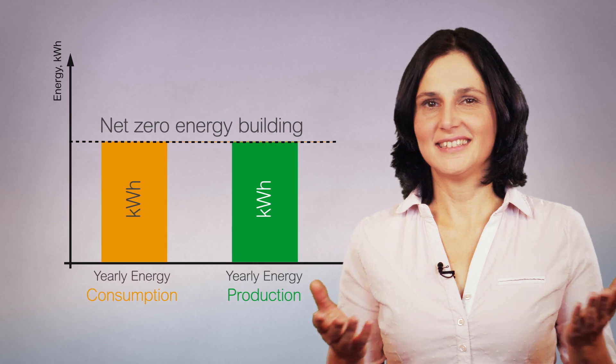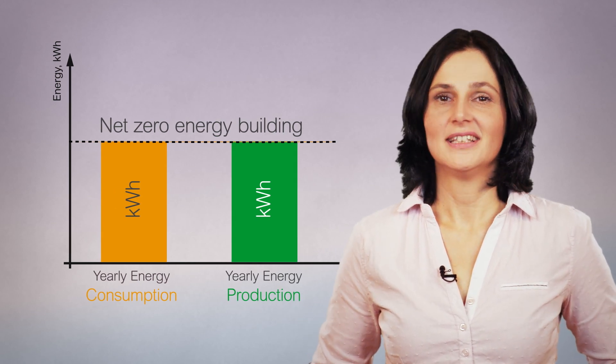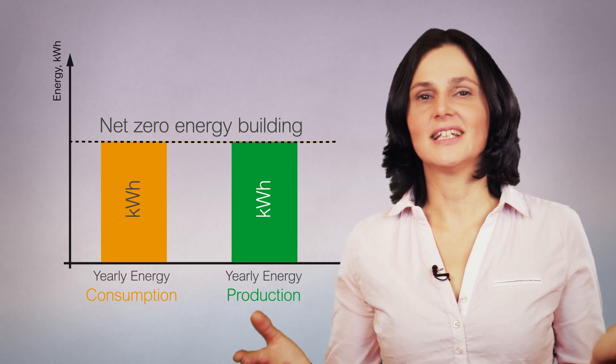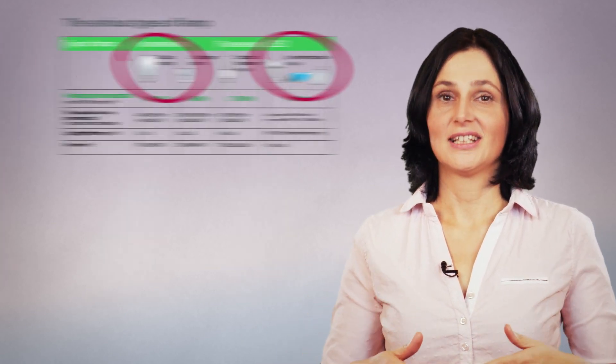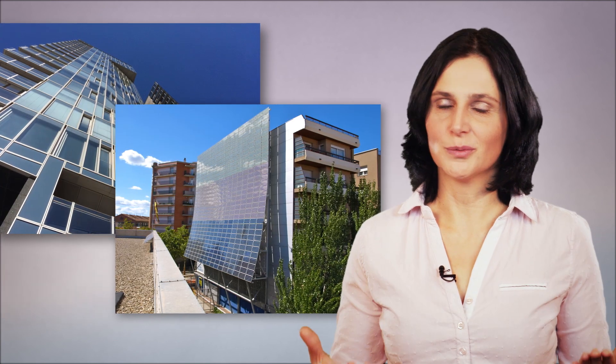In summary, a net zero energy building, by definition, is a building where the annual production is equivalent to its annual consumption. To achieve this, the building should be as energy efficient as possible and integrate local renewable energy production. More to come on the design of electrical installations with photovoltaic self-consumption. Thank you for watching.